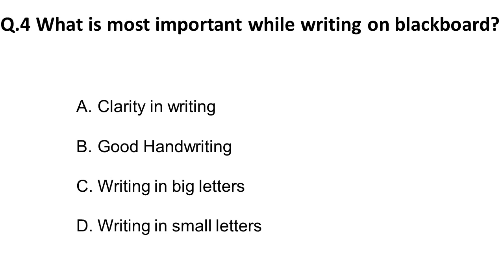The fourth question: what is the most important thing while writing on the blackboard? Good handwriting is a gift — not everyone has it, but everyone with whatever handwriting can be a teacher, so option B is ruled out. The correct answer is that there should be clarity in your writing. Whatever you write, whether good or bad, it should be readable to everyone. So clarity in writing is the correct answer.